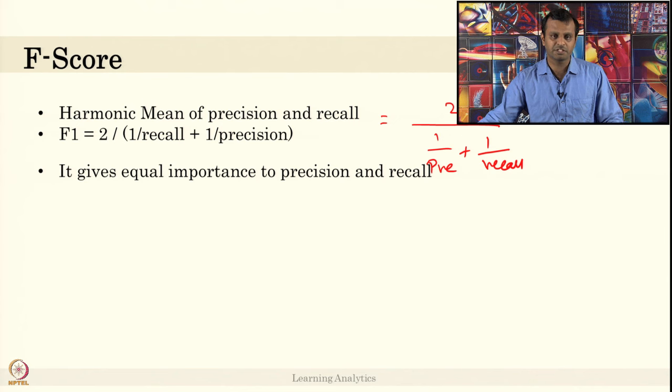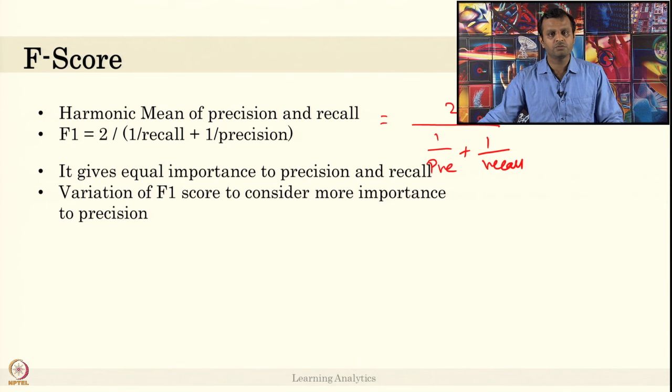In order to avoid this challenge that the F-score is giving importance to both precision and recall, what we can do? We can have a variation of F1 score computation methods that gives more importance to precision. You can add a weight to it when you are doing the precision and recall computation.